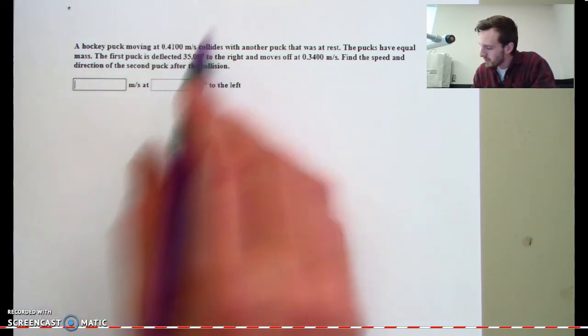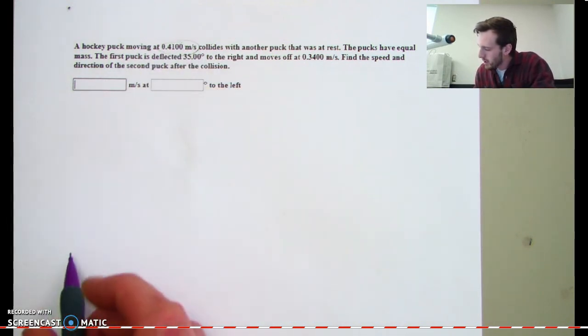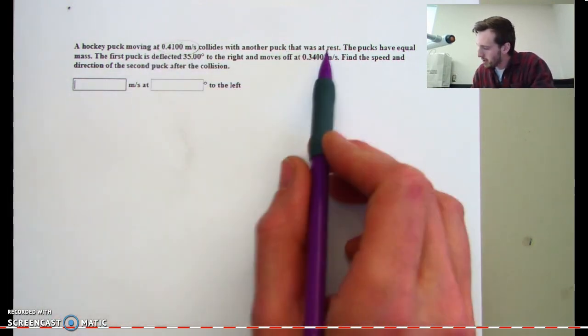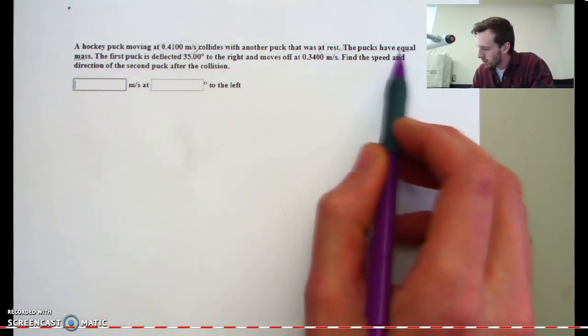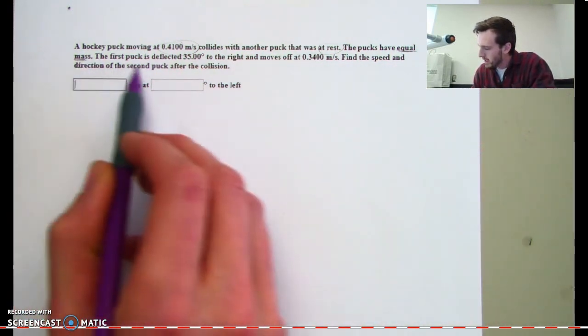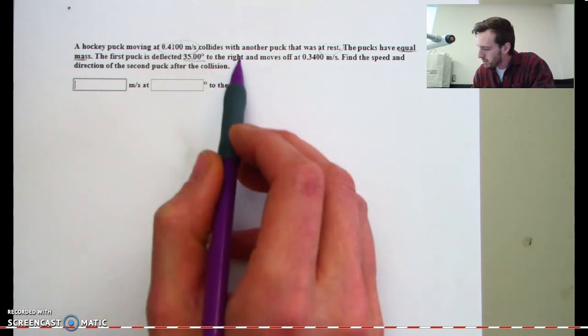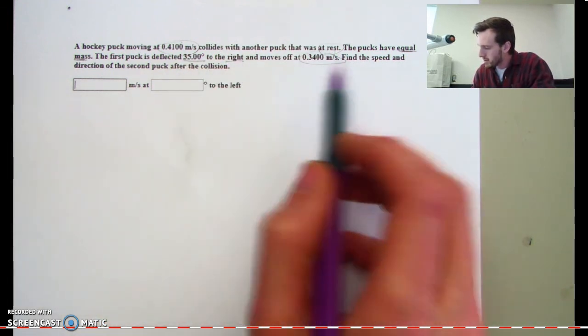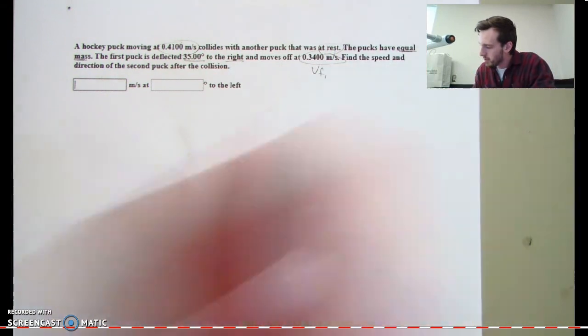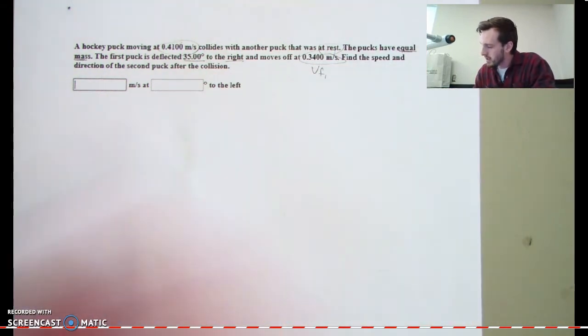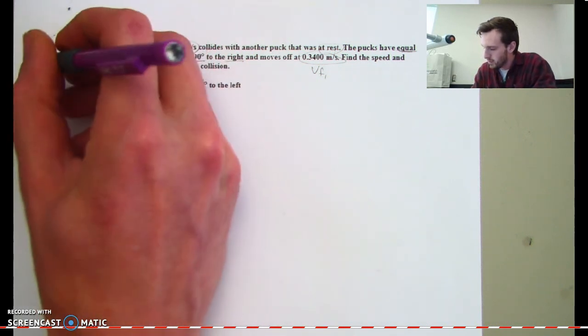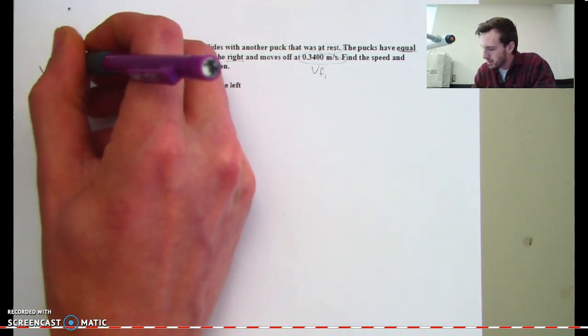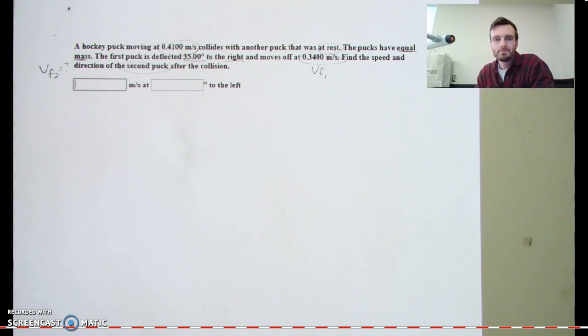Hockey puck moves at a certain speed, 0.41 meters per second, collides with another puck at rest. Pucks have equal mass, that's going to be important. The first puck is deflected at 35 degrees to the right and moves off. This is going to be our V-final for puck number one. And then it says, find the speed and direction of the second puck. So it's asking us, what is VF of puck number two after the collision? Alright, so we've set up this problem.